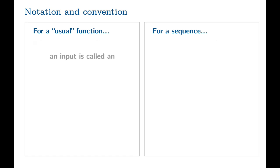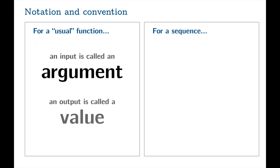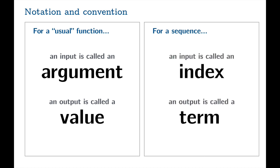Another distinction, for functions, we're used to calling inputs arguments, and outputs are the values. But for a sequence, an input is often called an index, and the output is often called a term. You should get used to this language. And when you hear it, you can translate on the fly, but we're really talking about inputs and outputs.